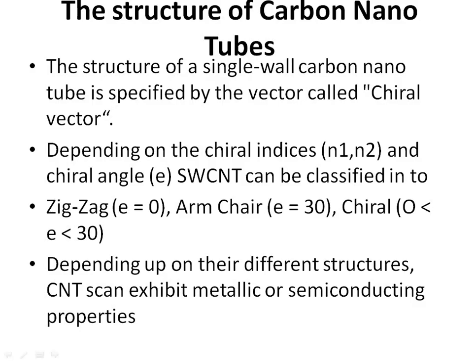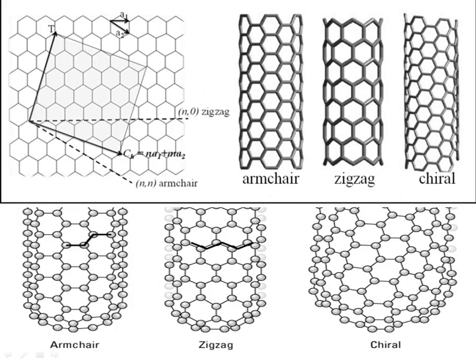The structure of carbon nanotubes. The structure of a single-wall carbon nanotube is specified by a vector called the chiral vector. Depending on the chiral indices N1, N2 and chiral angle θ, SWCNTs can be classified into: zigzag (θ = 0°), armchair (θ = 30°), and chiral (0° < θ < 30°). Depending on their different structures, CNTs can exhibit metallic or semiconducting properties. The image illustrates the carbon nanotube classification into zigzag, armchair, and chiral structures.